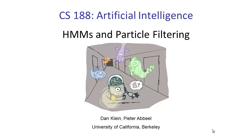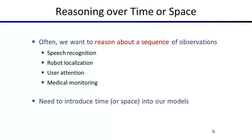So: reasoning over time and space. Often you want to reason about a sequence, and the most common case is that the sequence is the same kind of thing replicated over time. For example in robot localization — figuring out where a robot is on a known map, which is basically what Pac-Man is doing to the ghosts in that demo — you want to know where the robot is, and maybe at every time slice you get a reading from a rangefinder or sonar that gives you a noisy indication of where you might be.